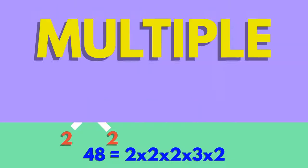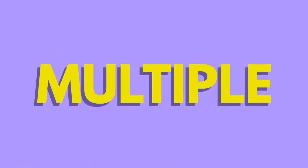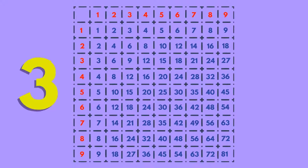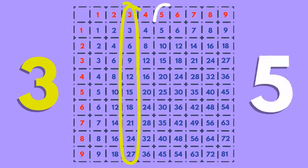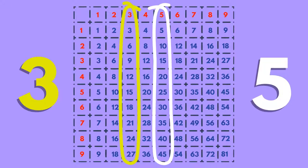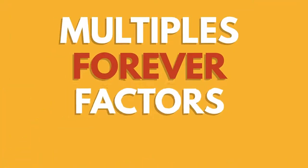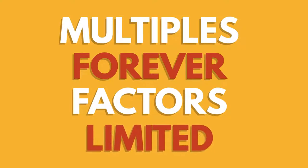A multiple of a number is found when you multiply it by a whole number. Examples can be seen in its multiplication table. Multiples go on forever, whereas factors are limited.